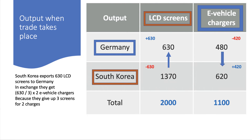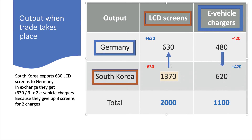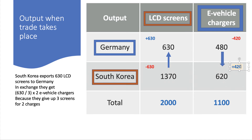There's more than one right answer, but let me take you through it. If South Korea exports 630 LCD screens to Germany, Germany goes up from 0 to 630, and South Korea goes down from 2,000 to 1,370. Now 630 at three for two — divide by three, multiply by two — translates to 420. So Germany has to give up 420 vehicle chargers to get the 630 LCD screens. South Korea picks those up: they were on 200 and get up to 620. That's the trade.